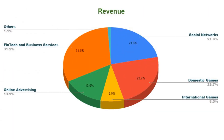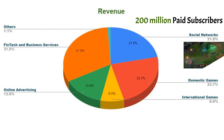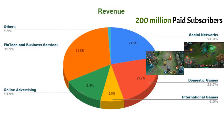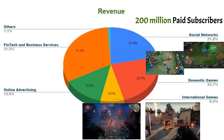Tencent has five segments. The first is Social Networks, where they make money from video and music subscriptions plus live events — they have over 200 million subscribers. The next is Domestic Games, with titles like League of Legends and Honor of Kings, though they reported a decline due to new regulations. They make money by selling virtual items and game subscriptions. The same applies to International Games, where they have titles like Valorant and V Rising.